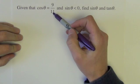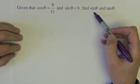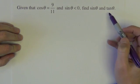Given that cosine theta equals 9 elevenths and sine theta is less than zero, find sine theta and tangent of theta.